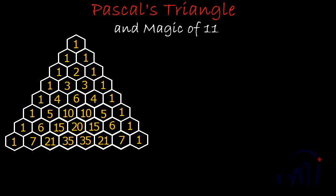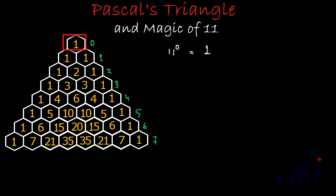You can find all the powers or exponents of 11 in Pascal's Triangle. Before we start, let me mark the row numbers. If I ask you what is 11 to the power 0 — whatever the number, if the exponent is 0, the value will be equal to 1. And the number written in the 0th row of Pascal's Triangle is also 1.